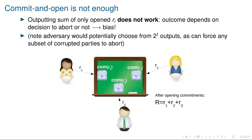We cannot say that the protocol aborts if at least one party aborts, because then we wouldn't have guaranteed output delivery. And even if the protocol terminates, we are not sure if that is because everyone is honest or because the adversary just happened to see that the result was beneficial for him.